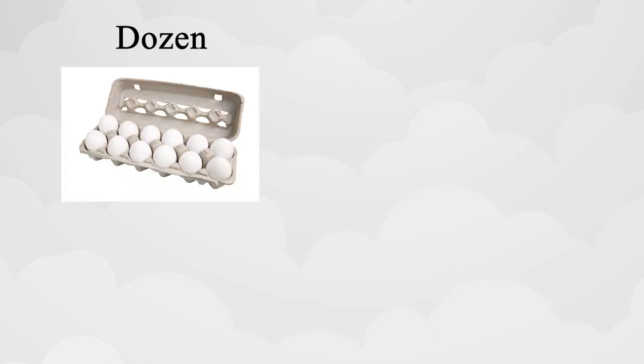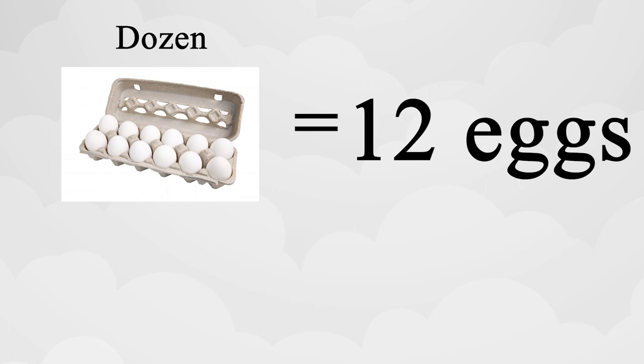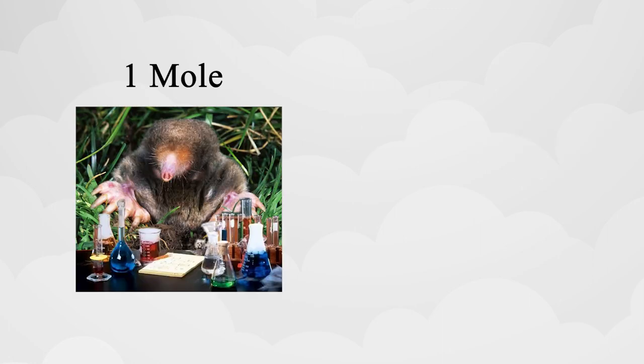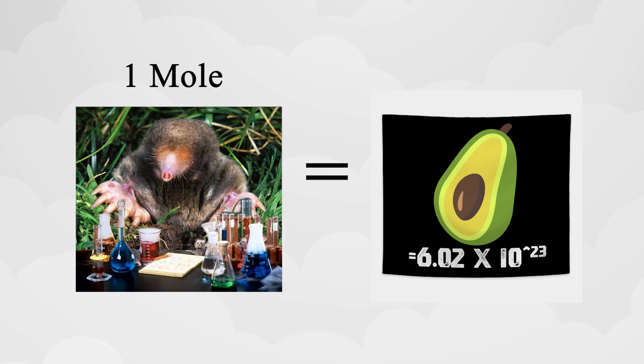Think of it like this. If you go to the store wanting to buy a dozen eggs, you know that you are buying 12 eggs. Well one mole would be 6.02 times 10 to the 23rd eggs.